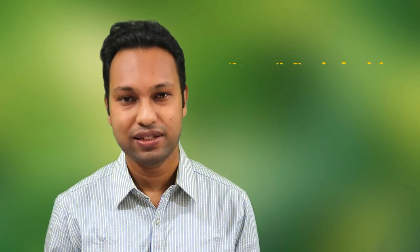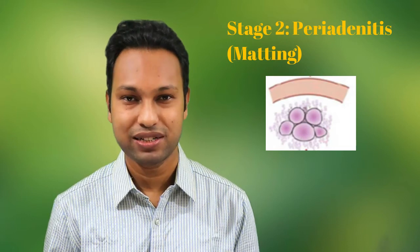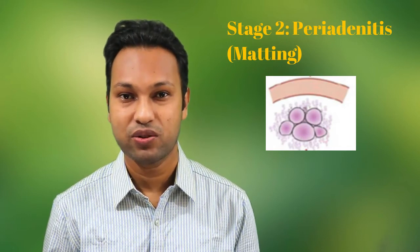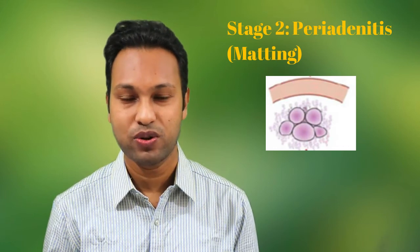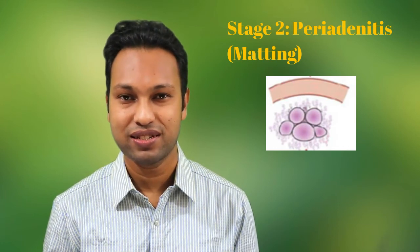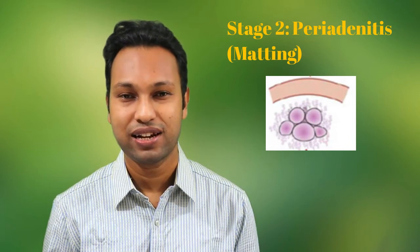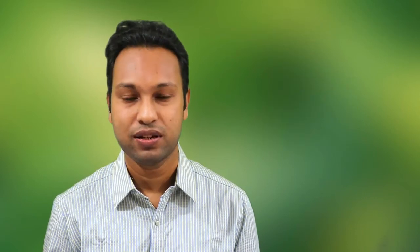Stage 2 is the stage of periadenitis. At this stage, the lymph nodes are enlarged, firm, and mildly tender, but they are attached to the surrounding tissue and to each other. So at this stage, if we palpate the nodes, we will feel that the nodes are matted.